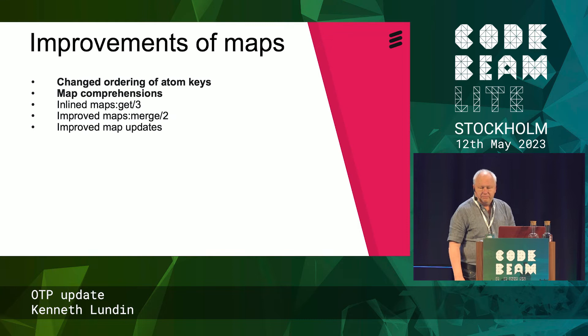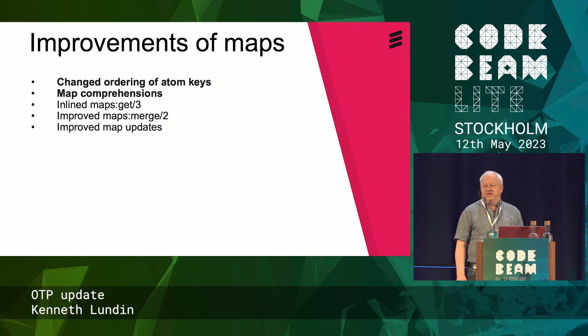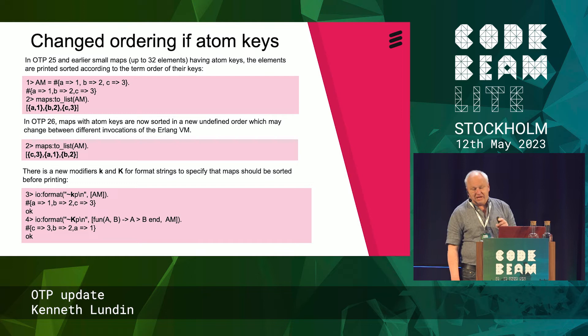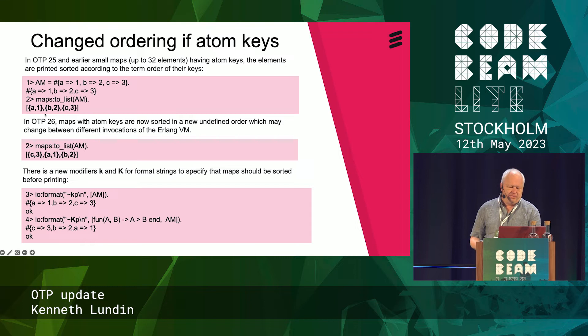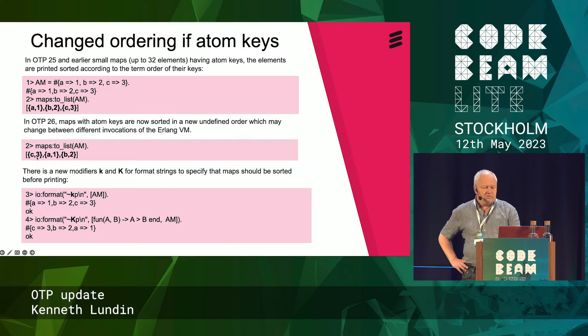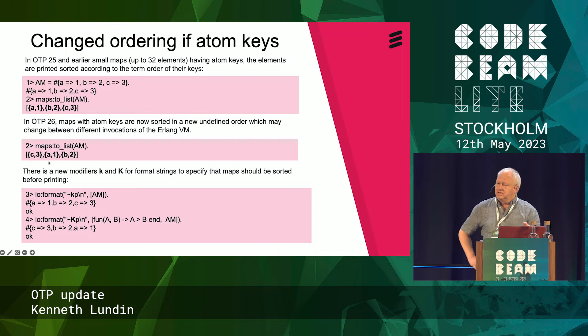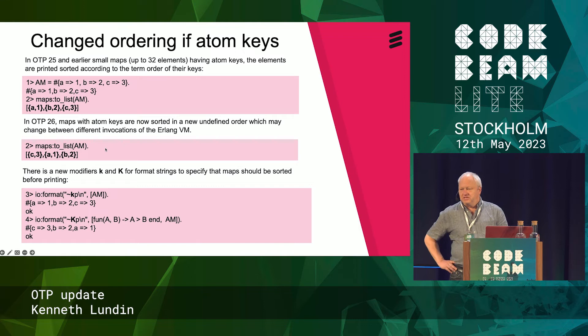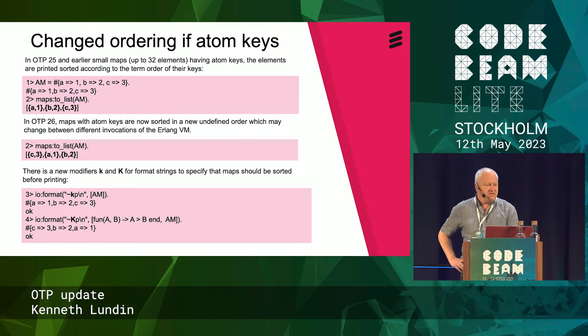Improvements of maps: one is a change in the ordering of atom keys for small maps, and another is the introduction of map comprehensions as a language feature. The change in ordering of atom keys — as you can notice here — when you create a map in OTP 25, you get A, B, C, the sorted order of the atoms. But now in OTP 26, it might be C, A, B, or something else. The order has never been guaranteed, but it is a difference now, so you can be surprised. This is an optimization, and because of that we have added two new modifiers for IO formats so you can sort maps when you print them. You can even use a fun to sort them.